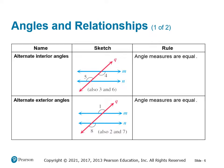The first kind of relationship we have is alternate interior angles — angles that are between the two parallel lines and on opposite, alternate sides of the transversal. These have the same angle measure. In this example, angles four and five are equal.